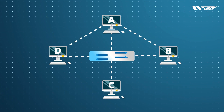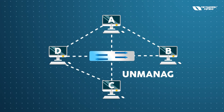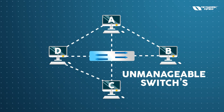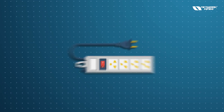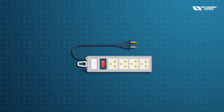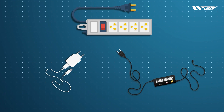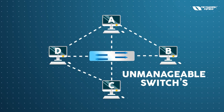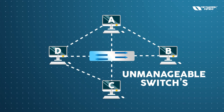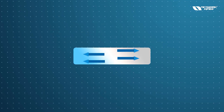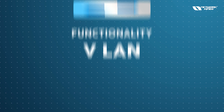With a basic $10 switch, when device A wants to communicate with device B, the information also passes to D and C. These are known as unmanageable switches. Unmanageable switches are like an extension board — you get multiple ports and can plug in chargers, laptops, and other devices. They are just an extension to connect multiple devices.